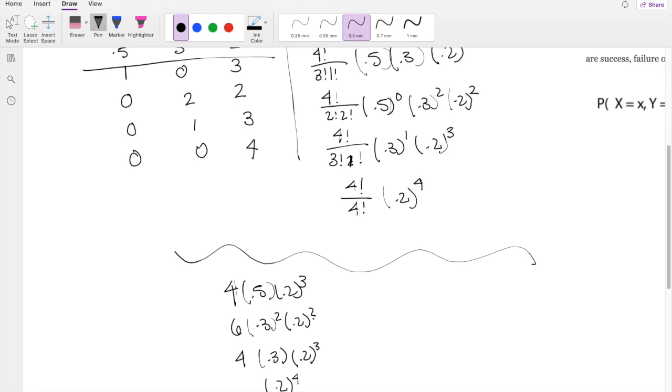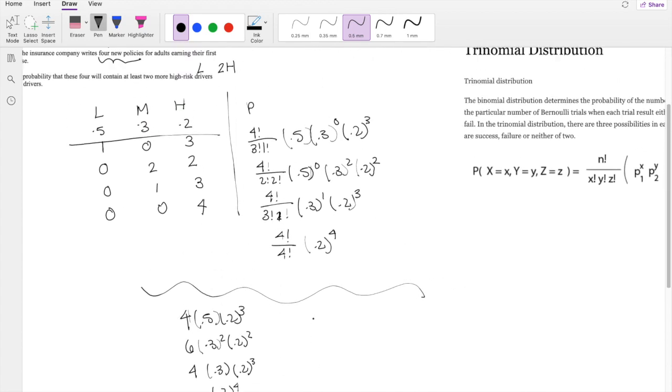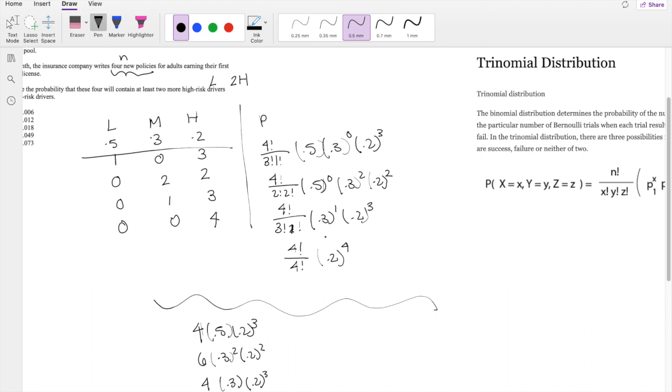And if you didn't remember this was a trinomial, you can always do this by hand. You can just think to yourself, how many ways can we rearrange 1 low and 3 high?